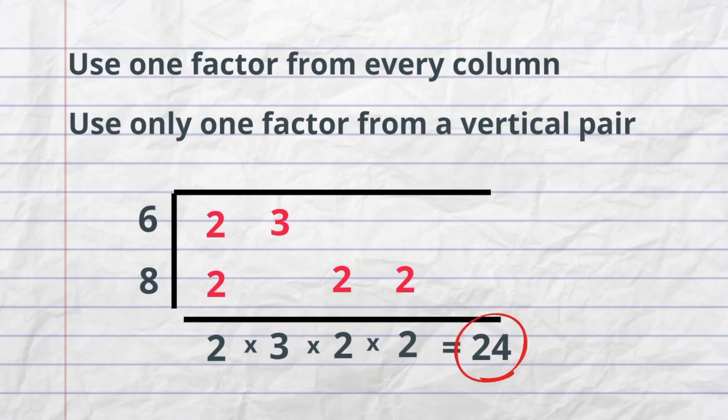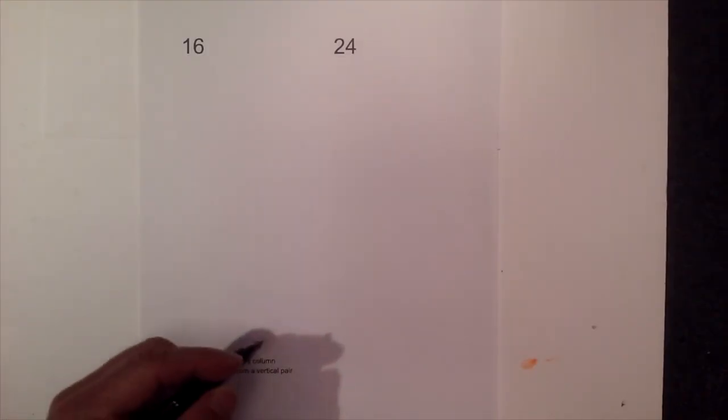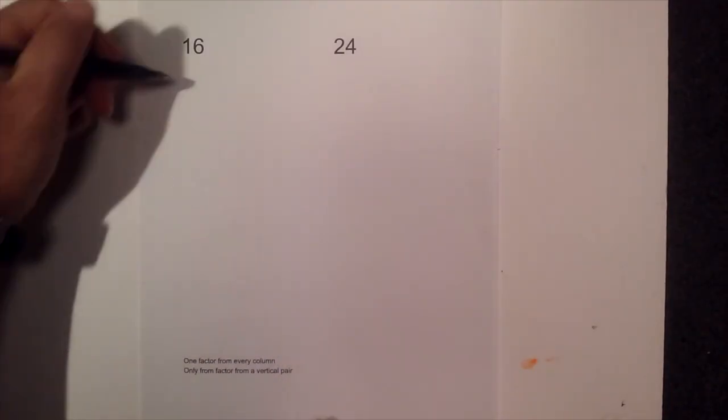I will continue to work several more examples to help you understand how to use prime factorization in order to find the LCM. Let's go ahead and find the LCM of 16 and 24. So I am going to begin with a factor tree of both numbers.